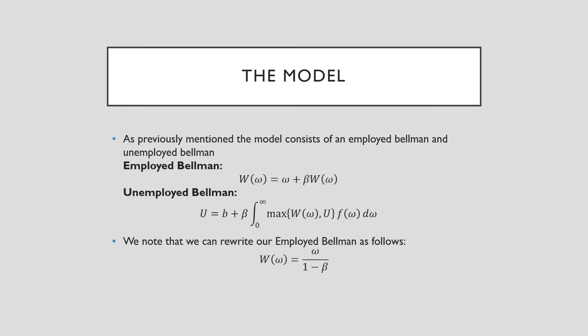We note that we can rewrite our employed Bellman as follows: W(omega) = omega/(1-beta). This is just a matter of taking beta*W(omega) to the other side and dividing by 1 minus beta.